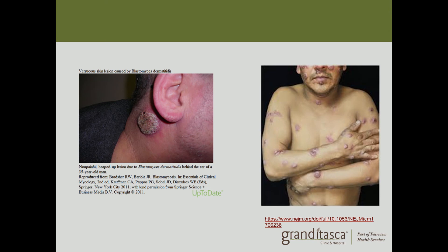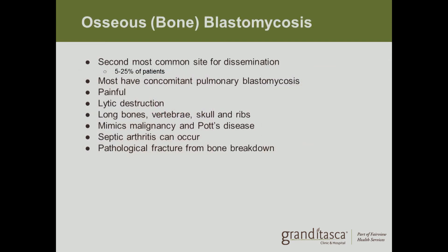These pictures show examples of the lesions — one behind the ear and another showing lesions across the arms, chest, and face. Osseous or bone blastomycosis is the second most common extra-pulmonary site after skin, seen in 5 to 25 percent of patients, who most likely also have pulmonary blastomycosis. It involves lytic destruction — destroying the bone from the inside — occurring in long bones such as the femur, vertebrae, skull, and ribs. It can mimic malignancy or Pott's disease, a form of tuberculosis in the bones, and can cause septic arthritis and pathological fractures.